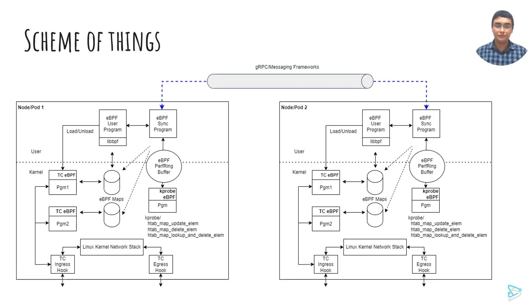Before moving forward, there are a few implementation-specific things we need to mention which the audience might find interesting. Kprobe would usually grab events related to all eBPF maps inside the system and this would cause a lot of churn. To reduce churn, the kprobe kernel-side program further filters events based on map names. Map names can be passed to the kernel-side program using a different set of eBPF maps.